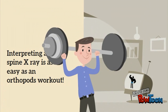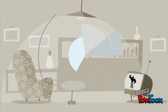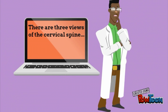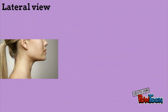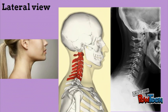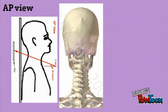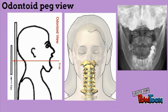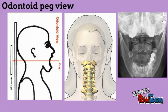Interpreting a C-spine x-ray is as easy as an orthopod's workout. There are three views of the cervical spine: the lateral view, the AP view, and the odontoid peg view.